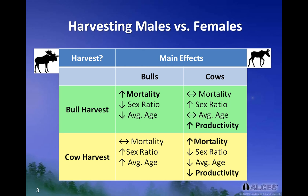So in contrast to a bull harvest — which directly increases male mortality but indirectly increases productivity because the proportion of cows increases — a cow harvest directly increases female mortality, reduces the proportion of breeding females, and decreases overall population productivity. A cow harvest imparts the combination of increased mortality and reduced productivity, which makes the population much more sensitive to over-harvesting.